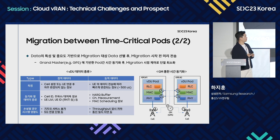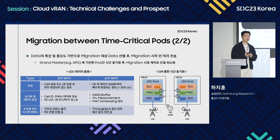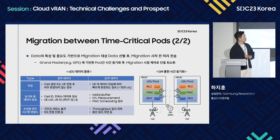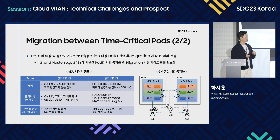첫 번째는 정적인 데이터로, 셀이 초기 설정될 때 그리고 사용자 단말이 기지국에 연결될 때 한 번 생성되고 그 뒤로 자주 바뀌지 않는 정보입니다. 예를 들어 셀 아이디, 주파수 대역폭 정보, 사용자 단말 리스트, 사용자 아이디 정보 등은 한 번 설정되면 이벤트가 있을 때마다 한 번씩 바뀌는 특성을 가집니다. 두 번째는 동적 데이터로, 사용자 단말의 데이터가 계속 전송될 때 굉장히 빠르게 변경되는 데이터입니다. 예를 들어 HARQ 버퍼, 채널 에스티메이션 정보, MAC 스케줄링 정보들은 굉장히 빠르게 변하는 특성을 가집니다.